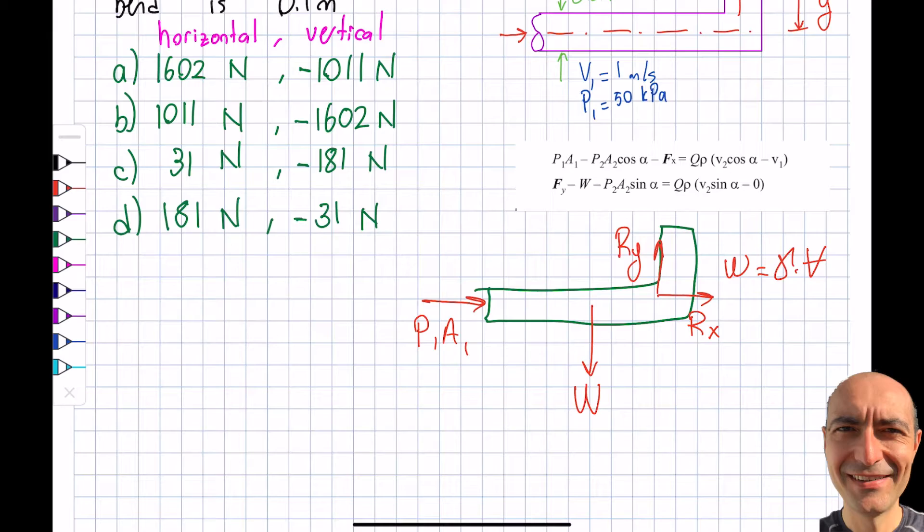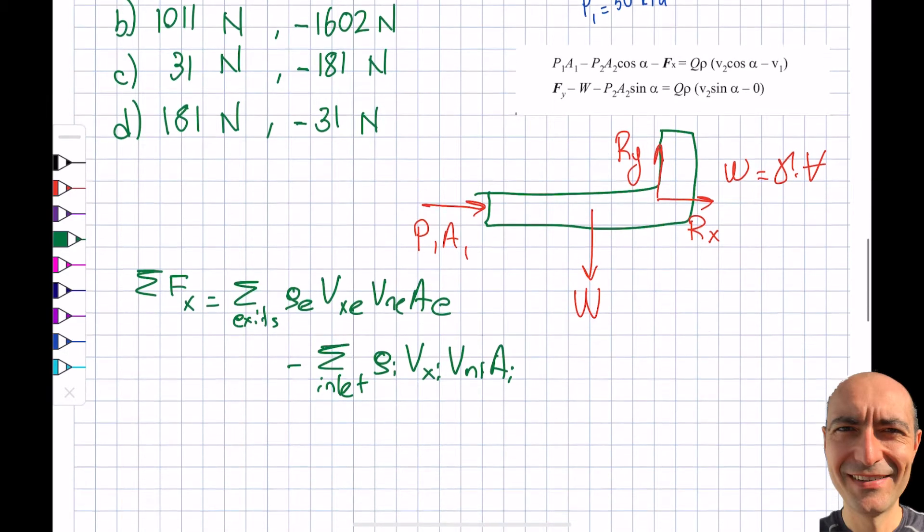So let's get to business. The first choices are given in horizontal so I'm going to start by that. So the summation of the forces in the x direction will be equal to over the exits, ρ exit Vx exit Vn exit A exit minus over the inlets. This question is on the easier side. I have only one inlet, one outlet. So this simplifies.